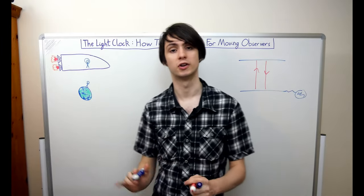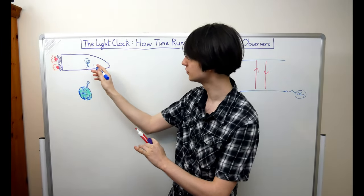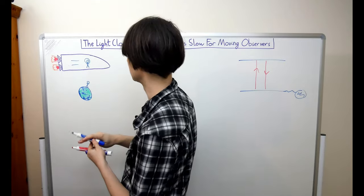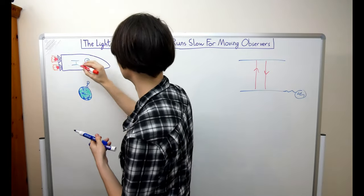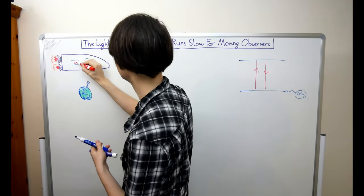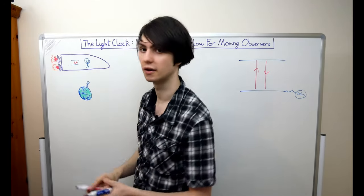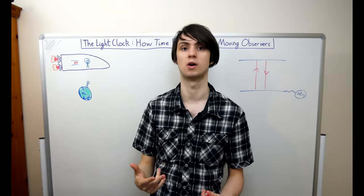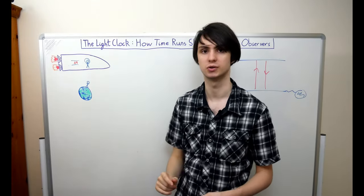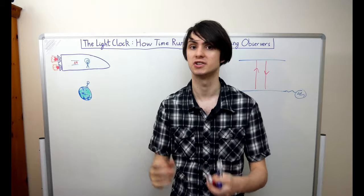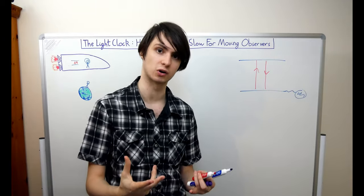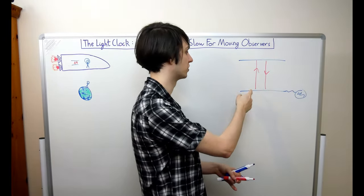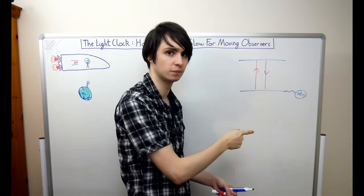Now let's suppose that on a spaceship we have an astronaut and we have a light clock. If this light clock is at rest relative to the astronaut then we can write down an expression for the length of time between ticks of the clock as measured by the astronaut. This is very simple to do because between each tick of the clock the astronaut sees the light beam travel vertically up and then vertically down.